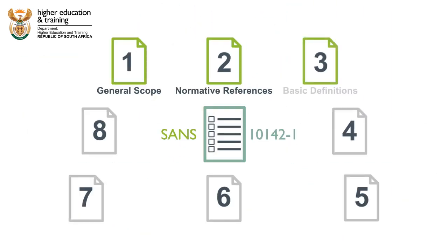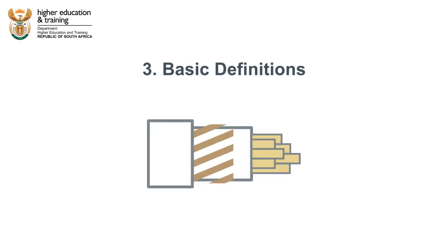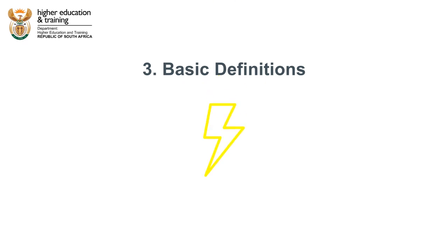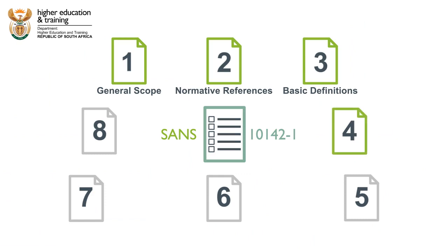We also need to be familiar with all the referenced codes as well. Clause 3 provides some basic definitions. For example, that an armored cable is a cable that has a covering of metallic wires or galvanized steel wires or steel tape as a protection against mechanical damage. Or, that low voltage is voltage that does not exceed 1000 volts alternating current or 1500 volts direct current.